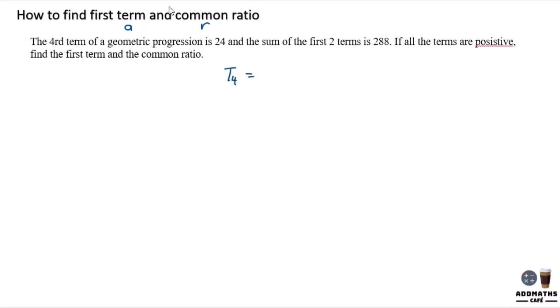T4 is 24 and the sum of first two terms, S2, is 288. So if all the terms are positive, find the first term and the common ratio.